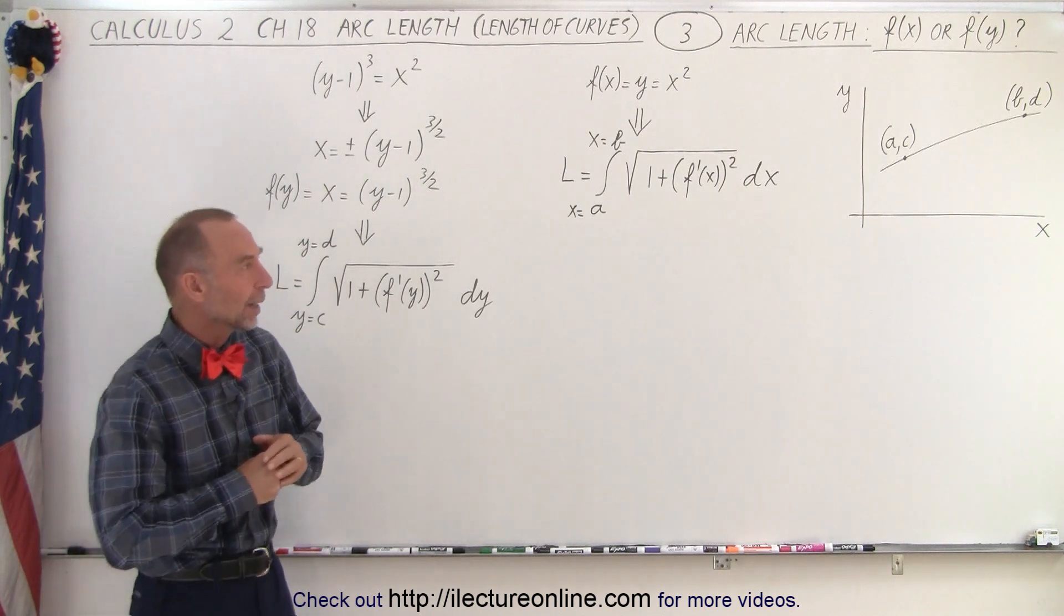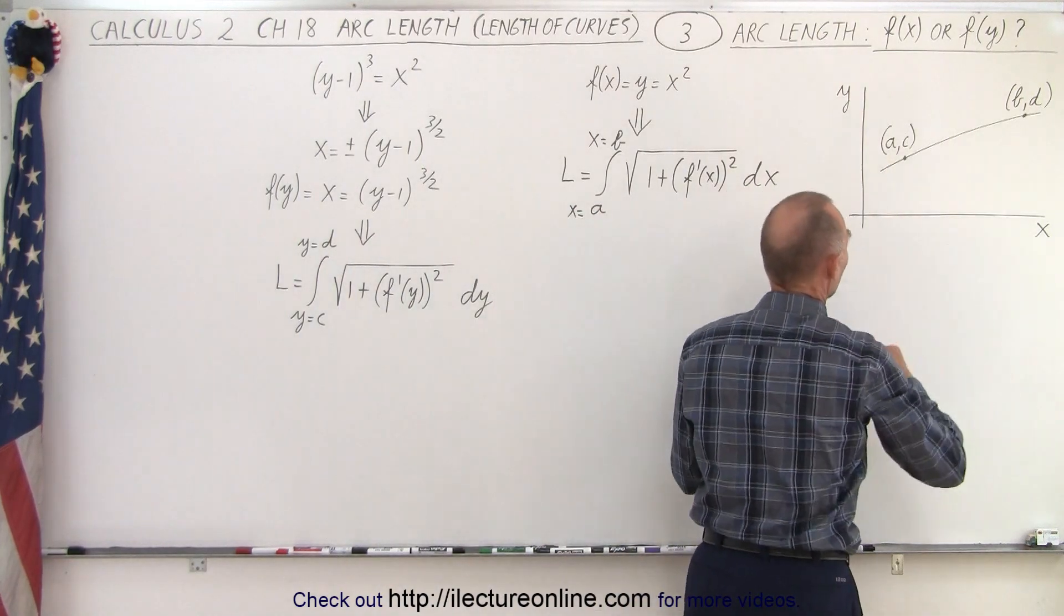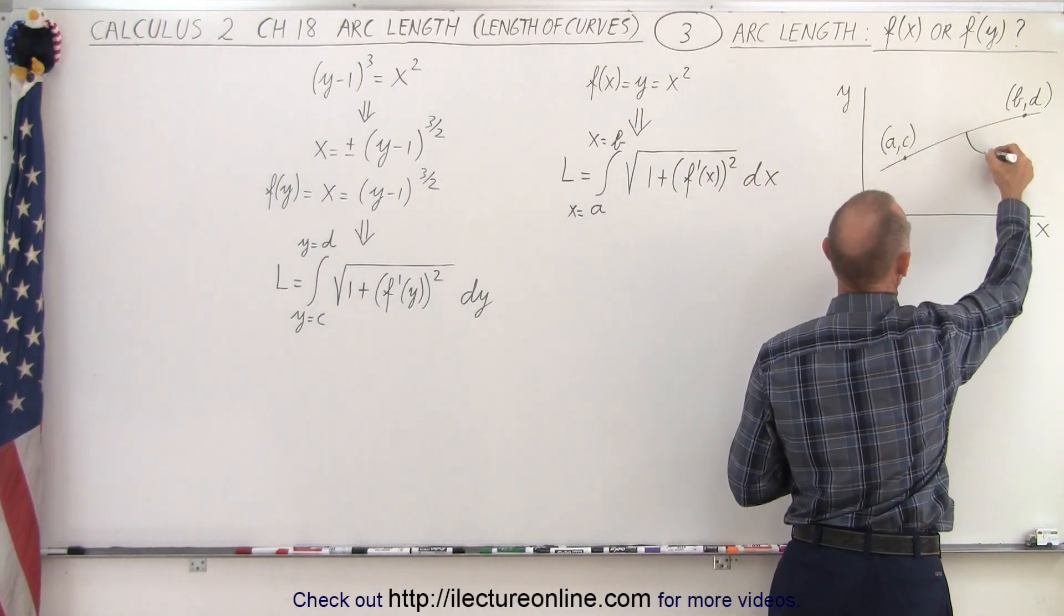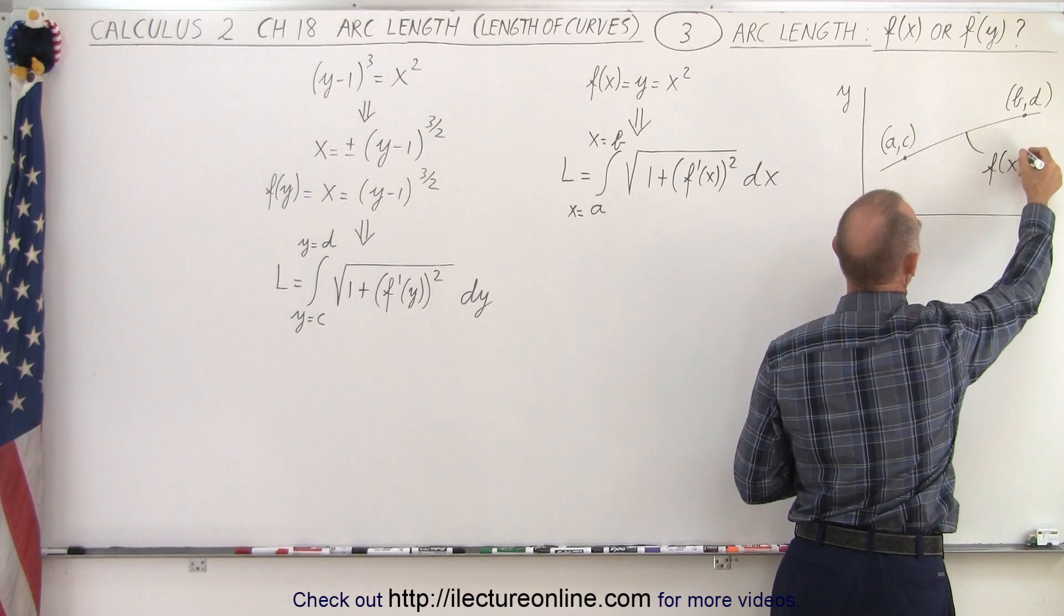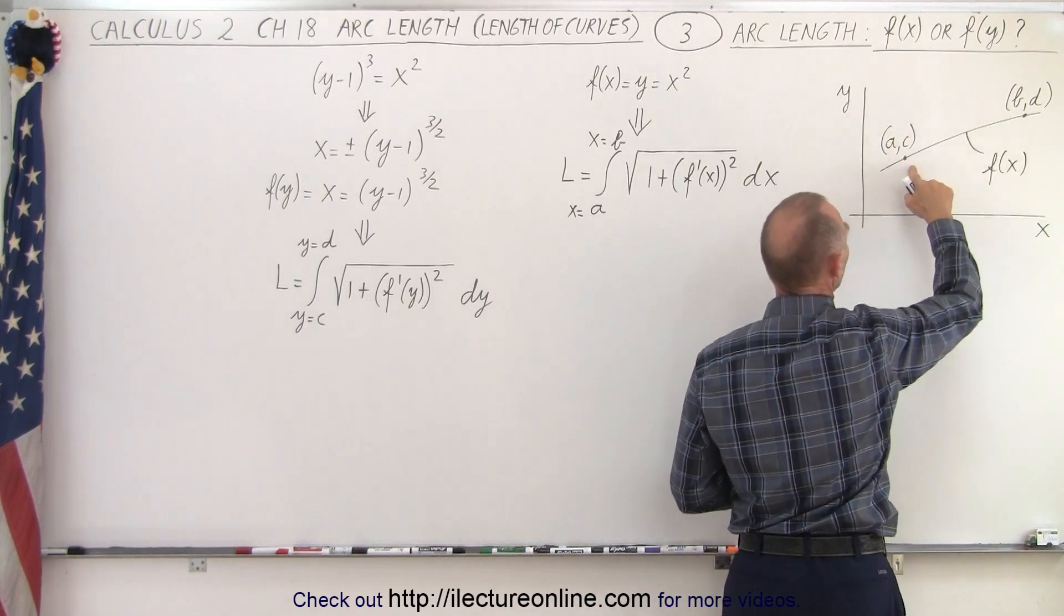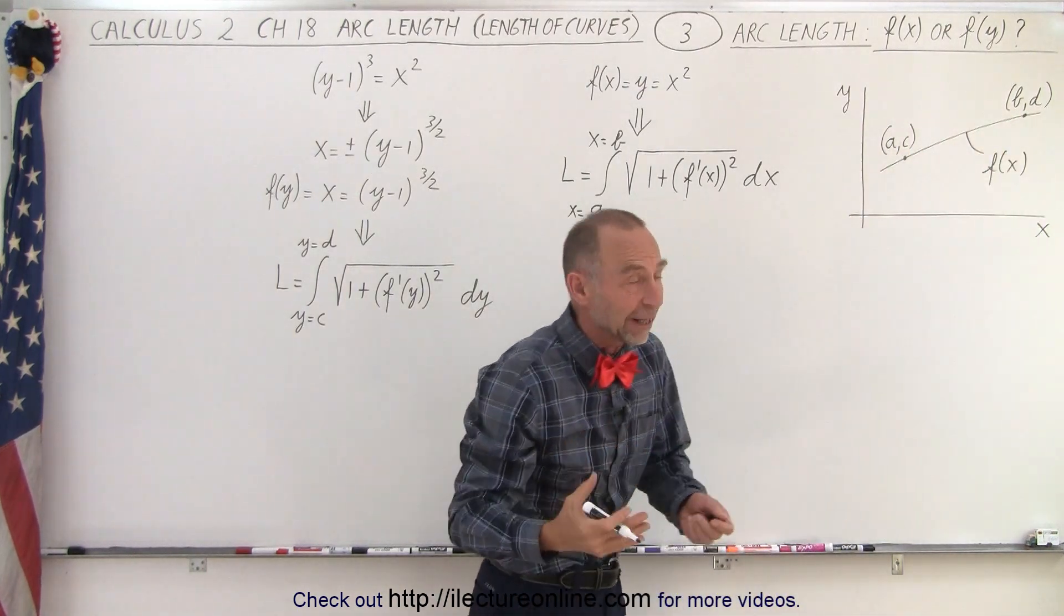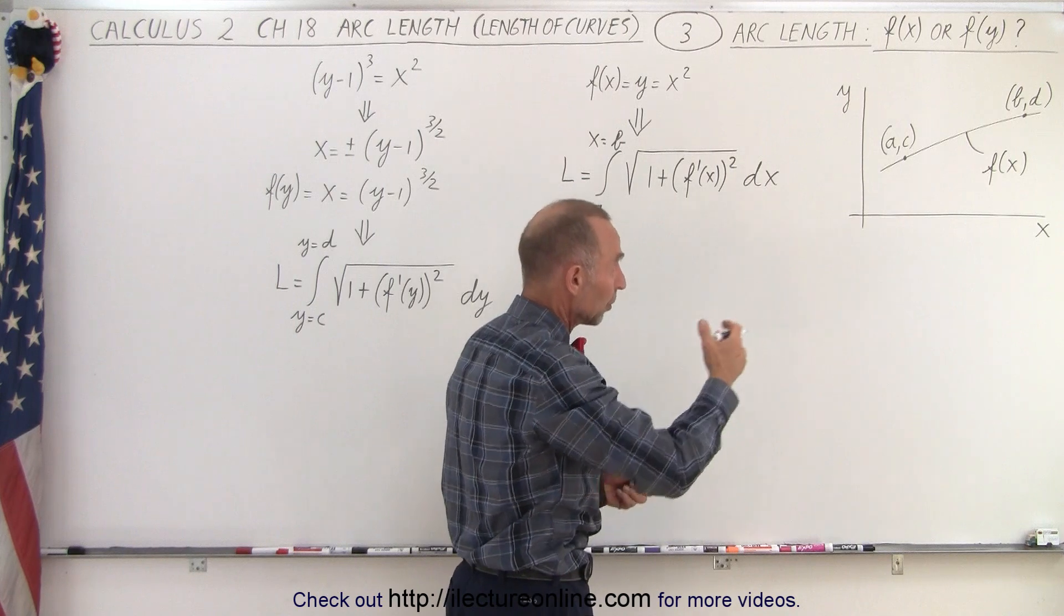Let me show you why that is so. Let's say we have two points on a curve, and of course we can call this curve a function of x. Notice that the x and y value of each of the two endpoints are called ac and bd, so we're trying to find the length from point ac to point bd.